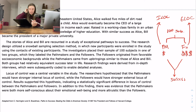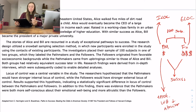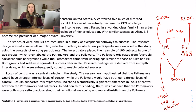Results indicated a statistically significant difference in locus of control between the path makers and followers. In addition, there was evidence that the path makers were both more self-conscious about their emotional well-being and more altruistic than the followers. So I'm noting emotional well-being and altruism in my flowchart. This was a really short passage — I just wanted to get the experimental design and variables down.